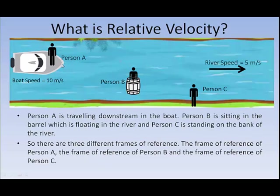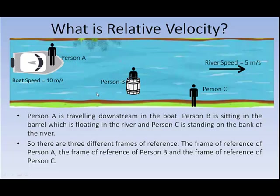Imagine there is a person A sitting in the boat, a person B sitting in the barrel, and a person C sitting on the bank of the river. If I ask you what is the velocity of person A, most of us will say that since the boat speed is 10 meters per second and the river speed is 5 meters per second, the velocity of person A is 15 meters per second. But this might not always be true.